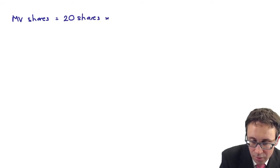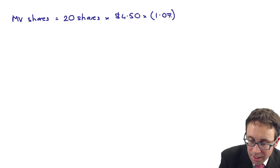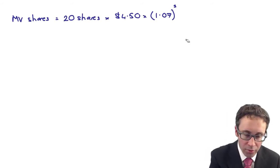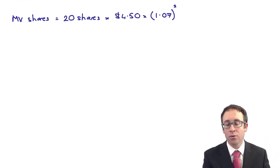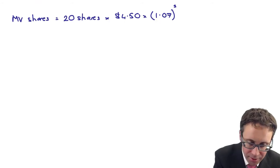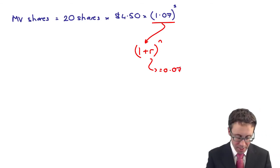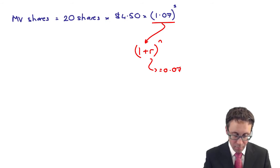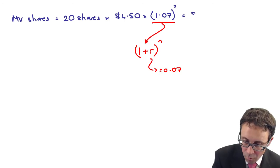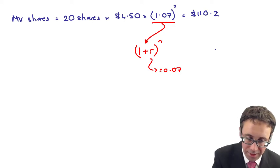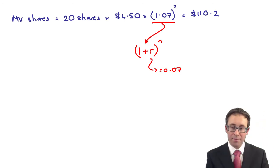So what we've got there, if we're looking at the market value of the shares, we know there are 20 shares that we could take. The current share price is $4.50. That is going to grow at 7% for three years. So one plus the discount rate to the power of N. The growth rate, I suppose the better word to use is 7%. So 0.07. I would hope that you're happy with this now. So that's 1 plus R to the N. That's 0.07. So 1.07 to the power of 3.